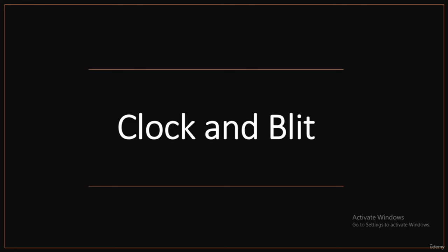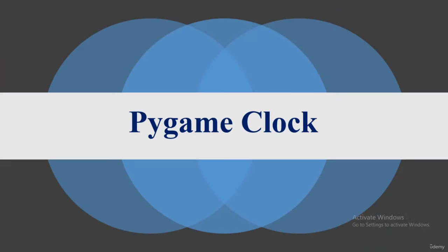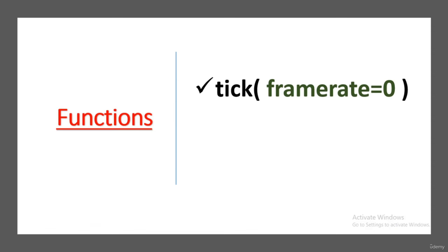Welcome to another tutorial covering Pygame in Python. In this tutorial we are going to talk about Pygame clock and Pygame blit. Times are represented in milliseconds in Pygame. Pygame clock is used to track time, which is essential to create motion, play a sound, or react to any event. In general we count time in milliseconds, not seconds. The clock also provides various functions to help control the game's frame rate.